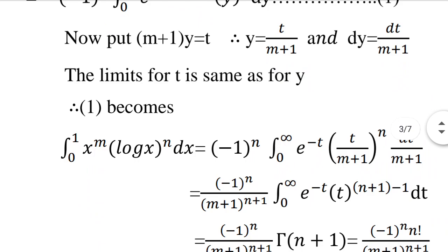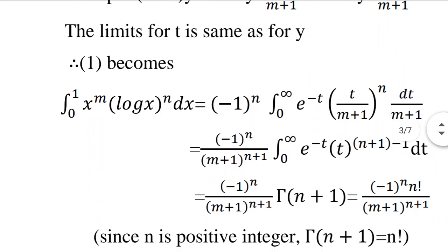The integral from 0 to infinity of e raised to minus t times t raised to n minus 1 dt is the gamma function. Here t raised to n corresponds to t raised to n plus 1 minus 1, so the integral equals gamma n plus 1. Since gamma n plus 1 equals n factorial for positive integer n, the result is minus 1 the whole raised to n times n factorial divided by m plus 1 the whole raised to n plus 1.